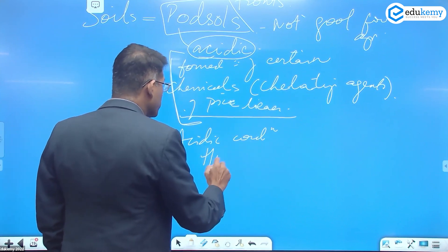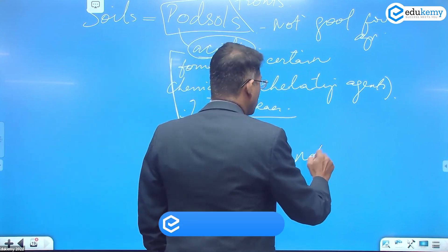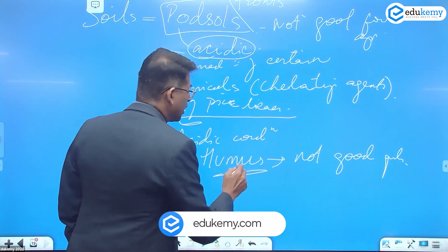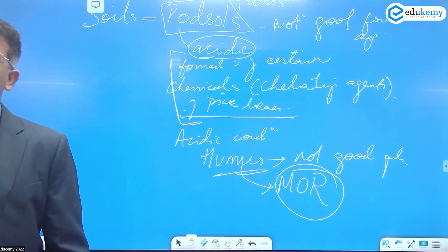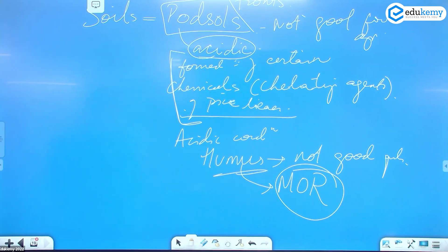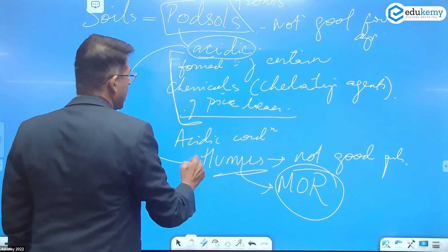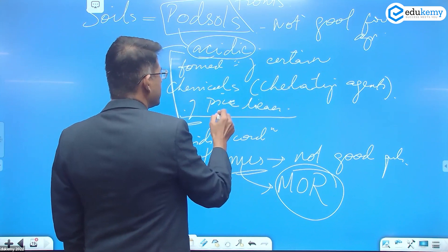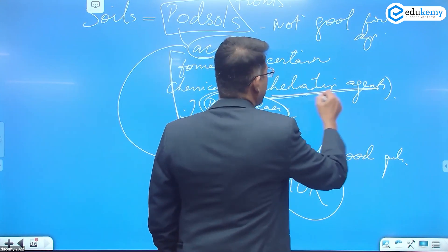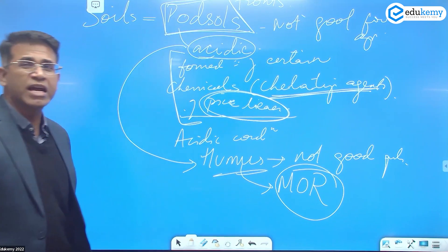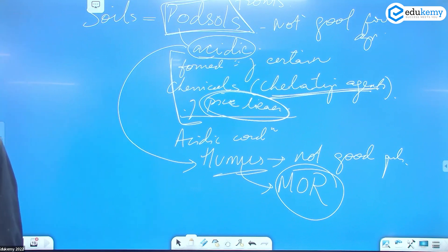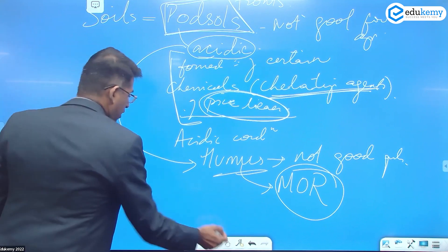The humus is a special type called mor humus. There are two types of humus: mull, which is good, or mor humus. Mor humus forms in conditions when the soil is acidic. This is because of the pine leaves, the special type of chemicals that make it acidic. The soils they are podzols, so these areas are not good for agriculture. Mor humus and podzols.